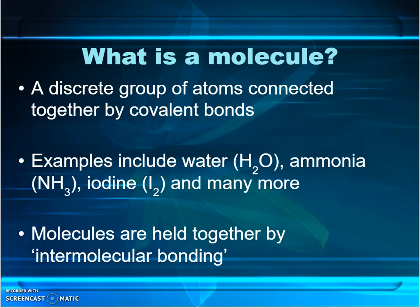The bonding within a molecule — between the atoms in the molecule — is covalent bonding. The bonding between molecules, so from one molecule to the next, is what's called intermolecular bonding.